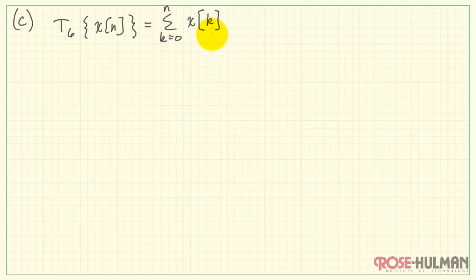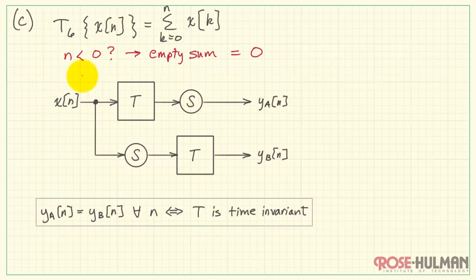Finally, let's take a look at system T_6. This sums from k equals 0 to n of the sequence values X. I'm going to clarify the case when n happens to be less than 0. The summation is an empty sum, and its result is 0. There might be other interpretations for the summation, but that's what we're going to use here. All right, as before, we begin with our proof structure.